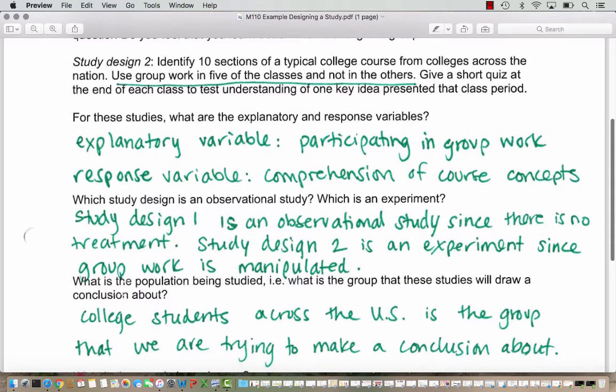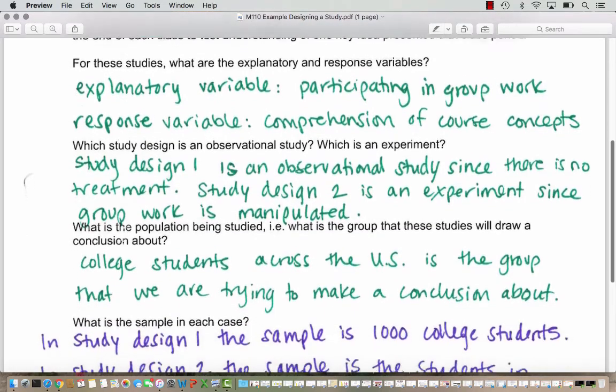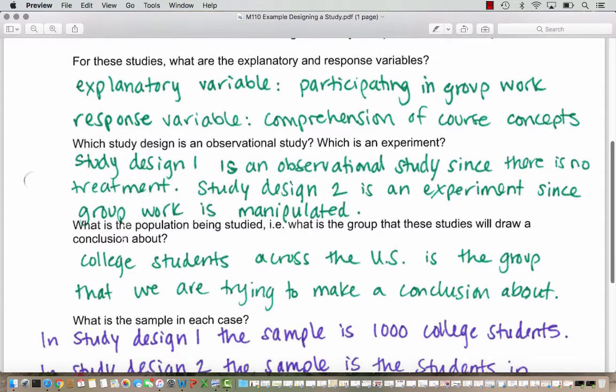Study design two is an experiment since the group work is manipulated in five of the classes and not in the others. Then we want to think about what's the population being studied - in other words, what is the group that these studies will draw a conclusion about? College students across the U.S. is the group that we are trying to make a conclusion about. We hope that the students in the studies are randomly sampled and randomly selected, though we don't know that for sure.